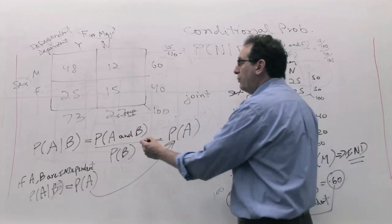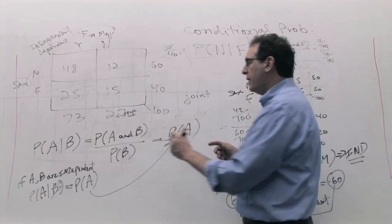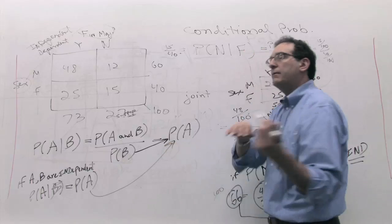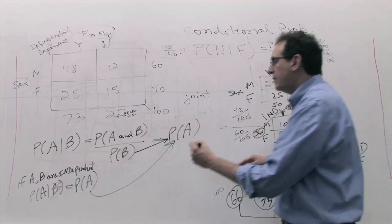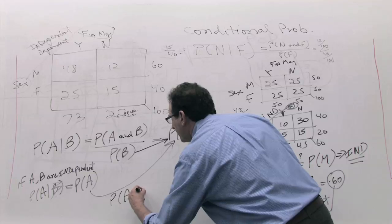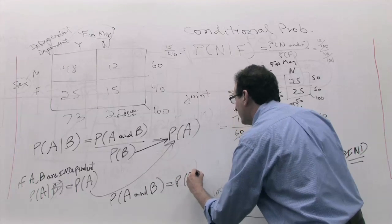Now, anybody recall from sixth or seventh grade, cross-multiplying, you bring something on the bottom of one equation to the other side by bringing it on the other side on the top. So we can write P of A and B equals simply P of A times P of B.